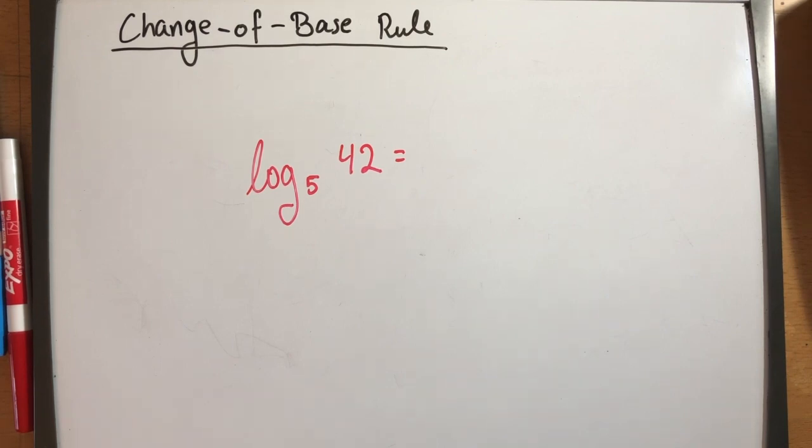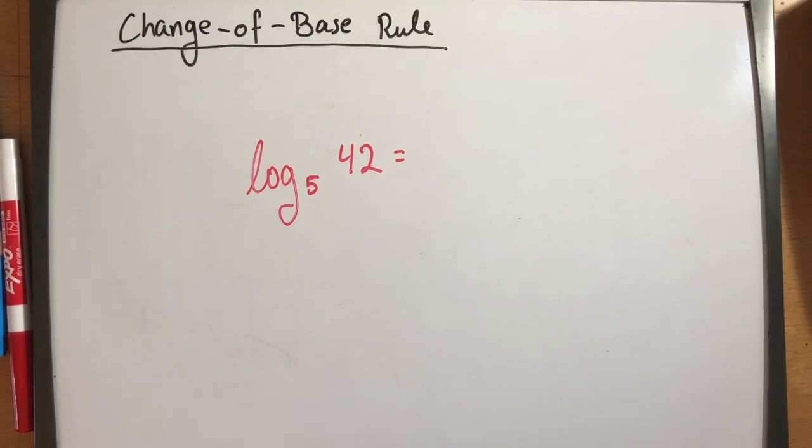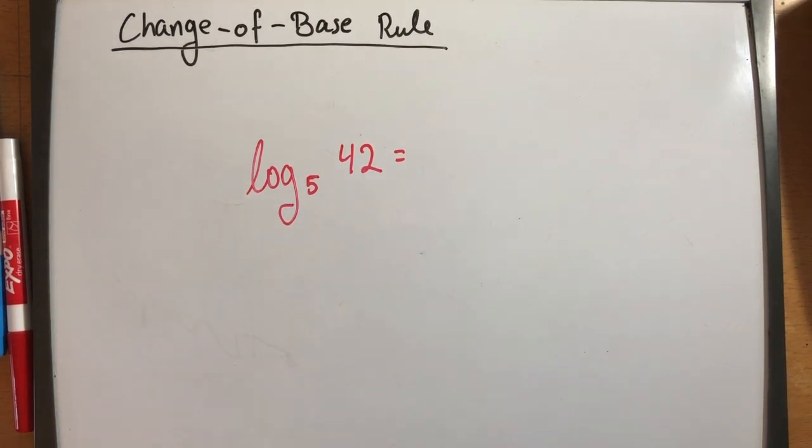So the problem here is, well, there's no whole number that I know that can give me that answer because I know 5 squared is 25, which is less than 42. But 5 cubed would be 125, which is a lot more higher than 42.